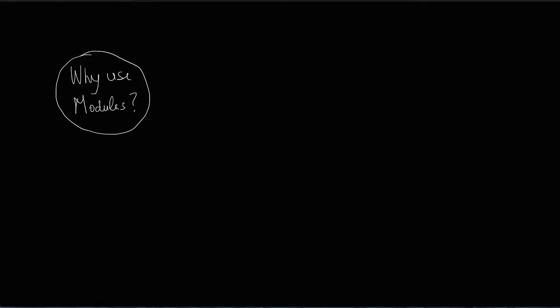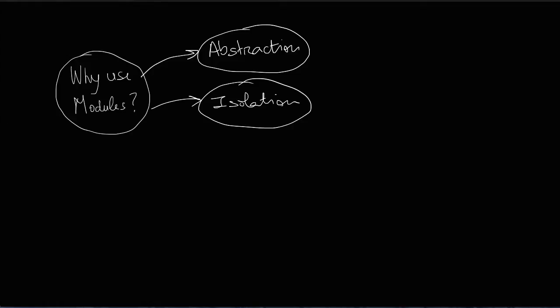By splitting functionality into modules you are creating an abstraction that hides the module's implementation and it's easier to use. So abstraction is the first benefit of using modules. You also isolate functionality making it easier to test and to maintain. So isolation is the second benefit.